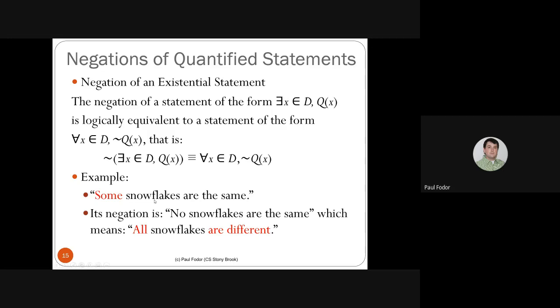For example, 'some snowflakes are the same' — its negation is 'no snowflakes are the same,' meaning 'all snowflakes are different.' The negation of the existential quantifier becomes a universal quantifier of the negation.